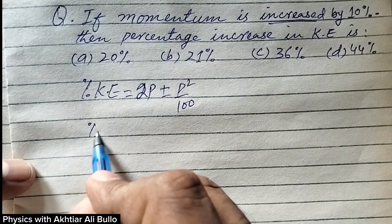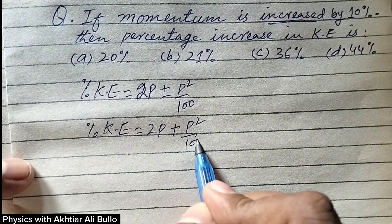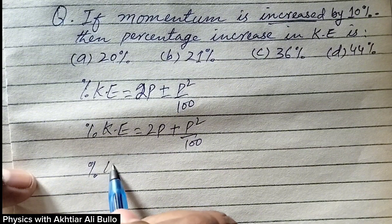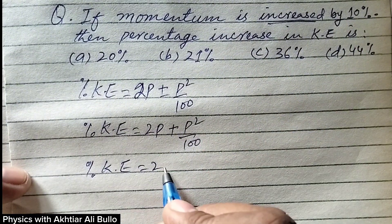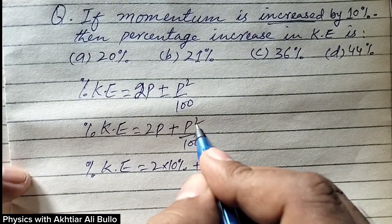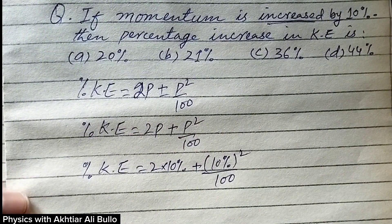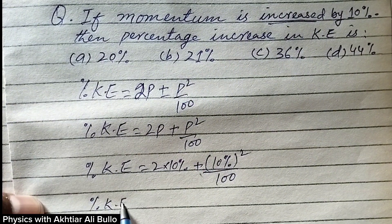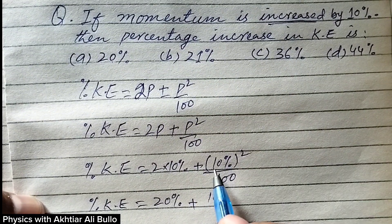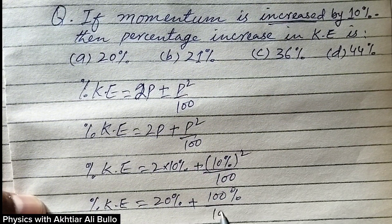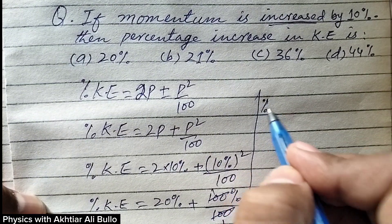Since there is an increase in momentum, we take the positive symbol. So percentage increase in kinetic energy = 2p + p²/100. Substituting p = 10%: it equals 2 × 10 + (10)²/100, which gives 20% plus 100/100.